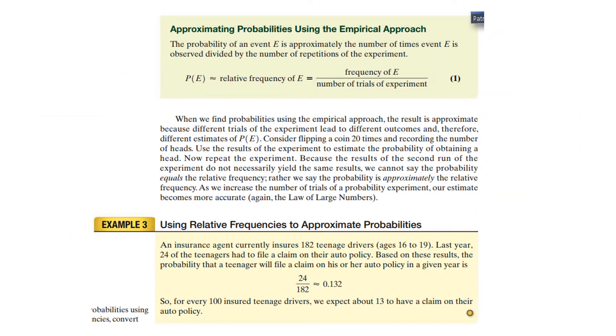And we can approximate the probabilities using an empirical approach, and that's exactly what we did. The probability of E happening is how often does E happen divided by the number of times that we did the experiment. Okay, so for example, an insurance agent has 182 teenage drivers that are aged 16 through 19, and 24 of them filed claims. And so he could estimate from that experiment that 24 out of 182, or about 13%, would have accidental claims filed.